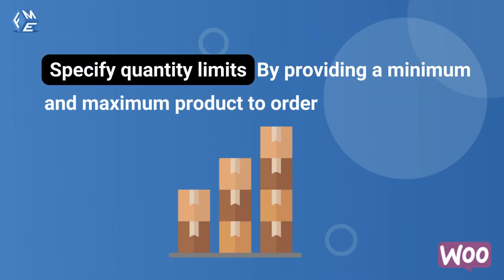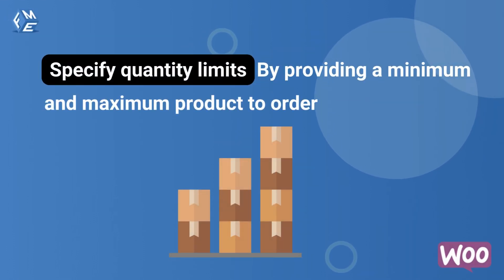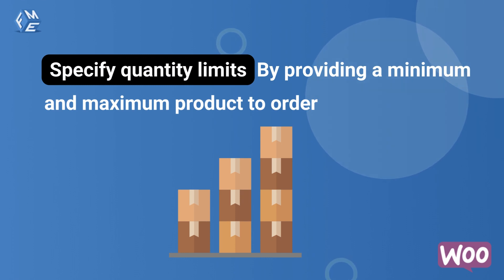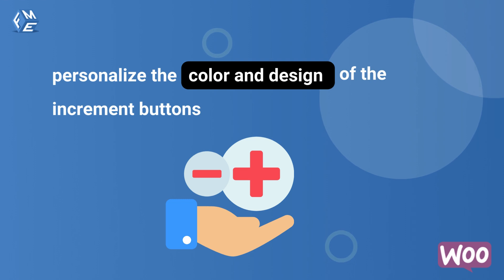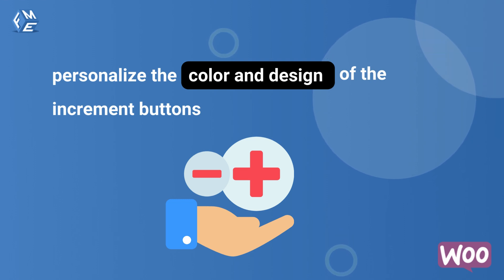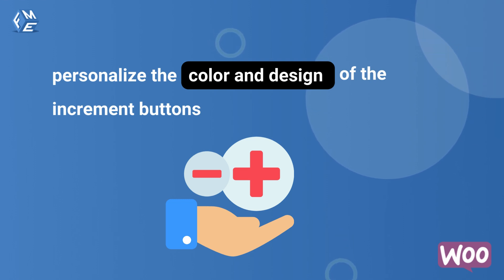By providing a minimum and maximum product quantity to order, you can set quantity limits as well. The plugin also comes with customization settings to help you personalize the color and design of the increment buttons.